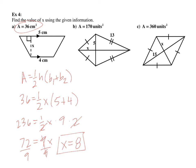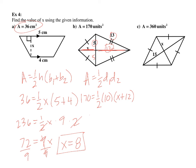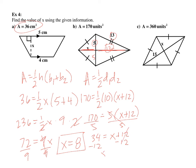For part B, area of a kite is half of diagonal 1 times diagonal 2. Diagonal 1 is 10 (since that segment is 5, doubled). Diagonal 2 is x plus 12, using Pythagorean triples for the value 12. The area is 170, so 170 equals 5 times (x plus 12). Divide by 5 to get 34 equals x plus 12, subtract 12, and x equals 22.